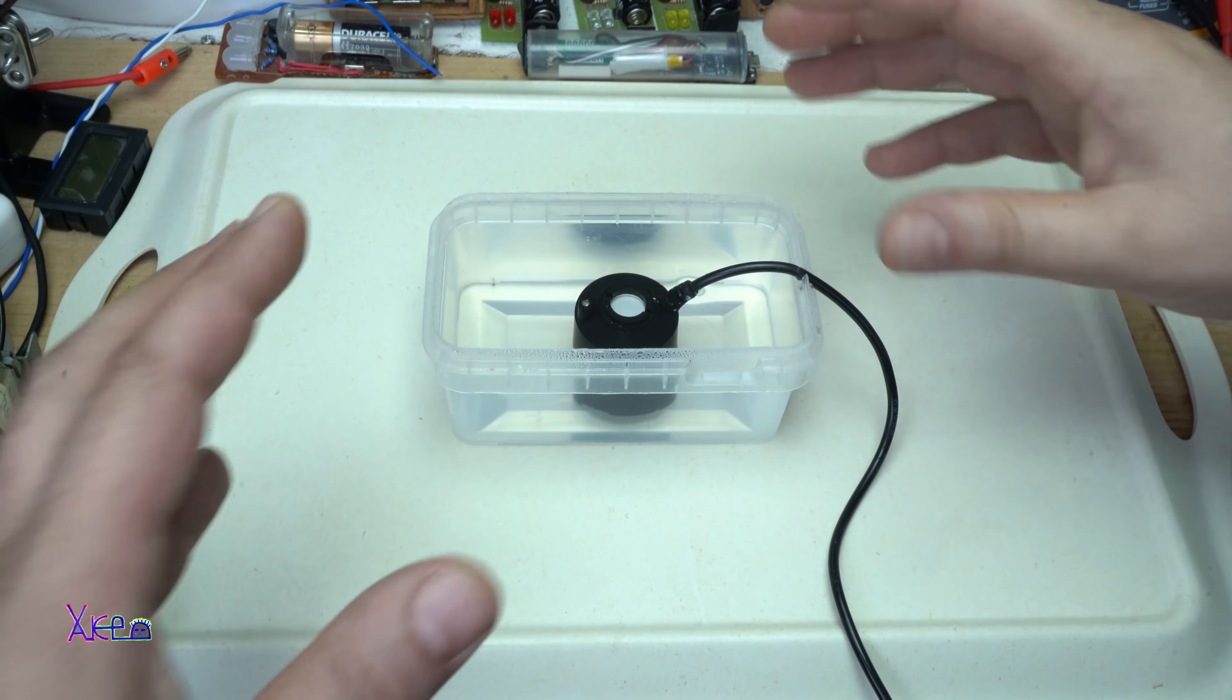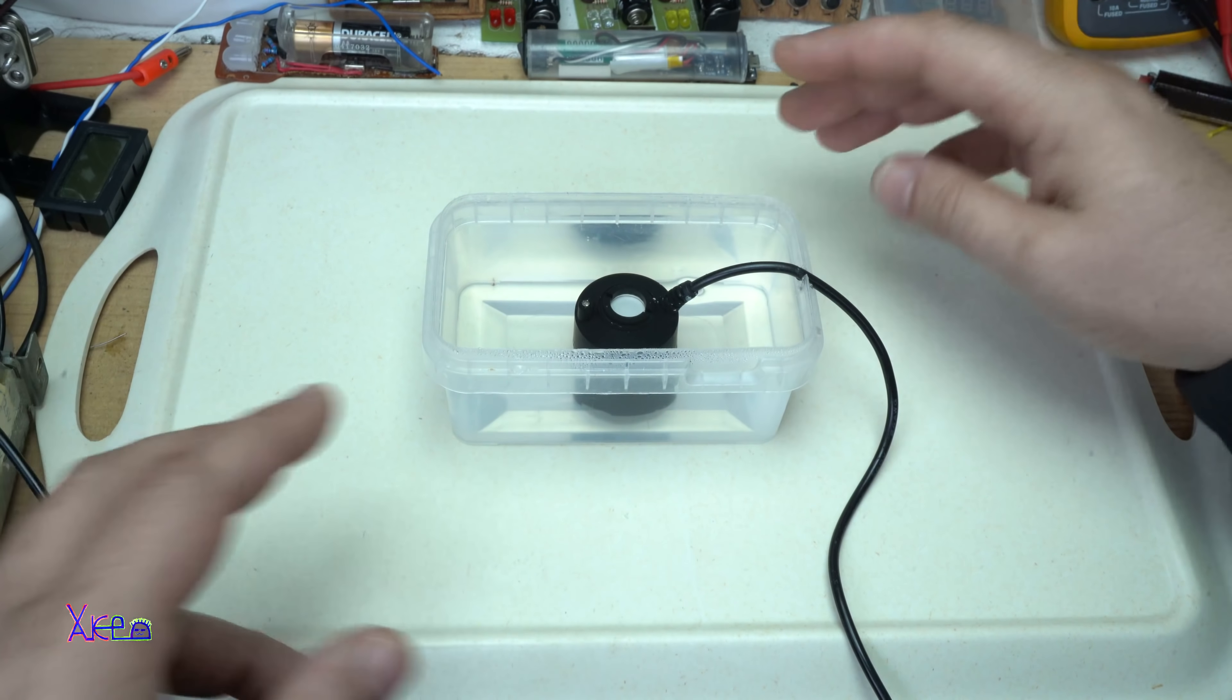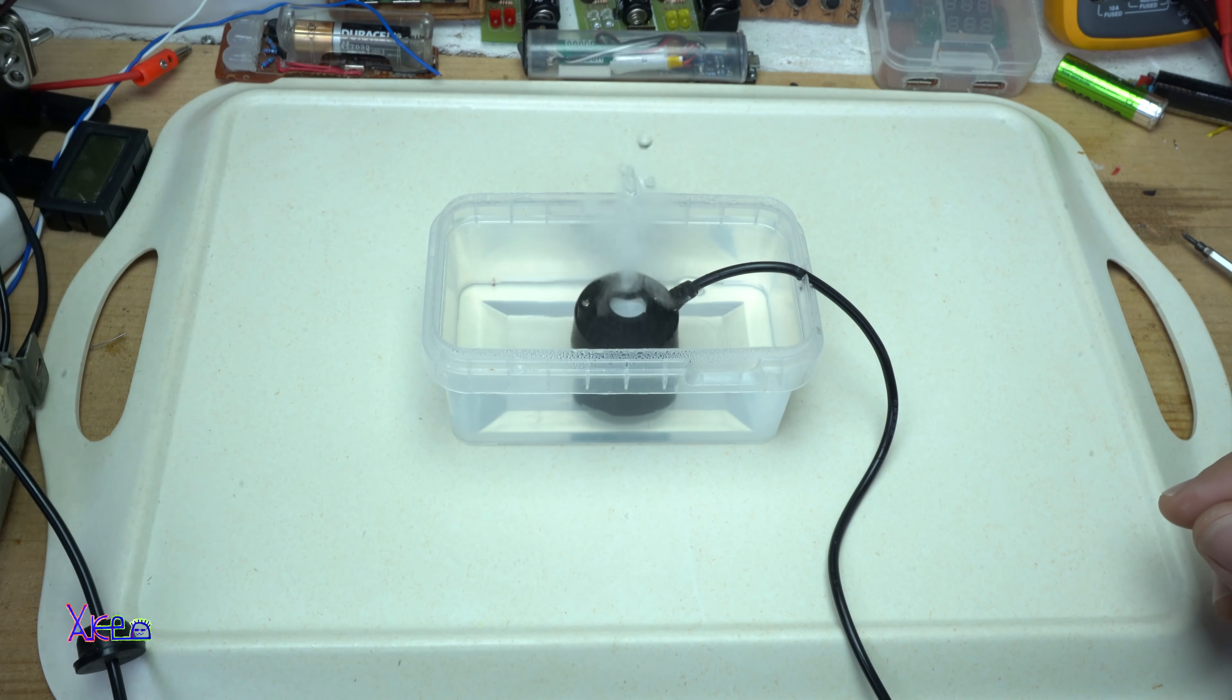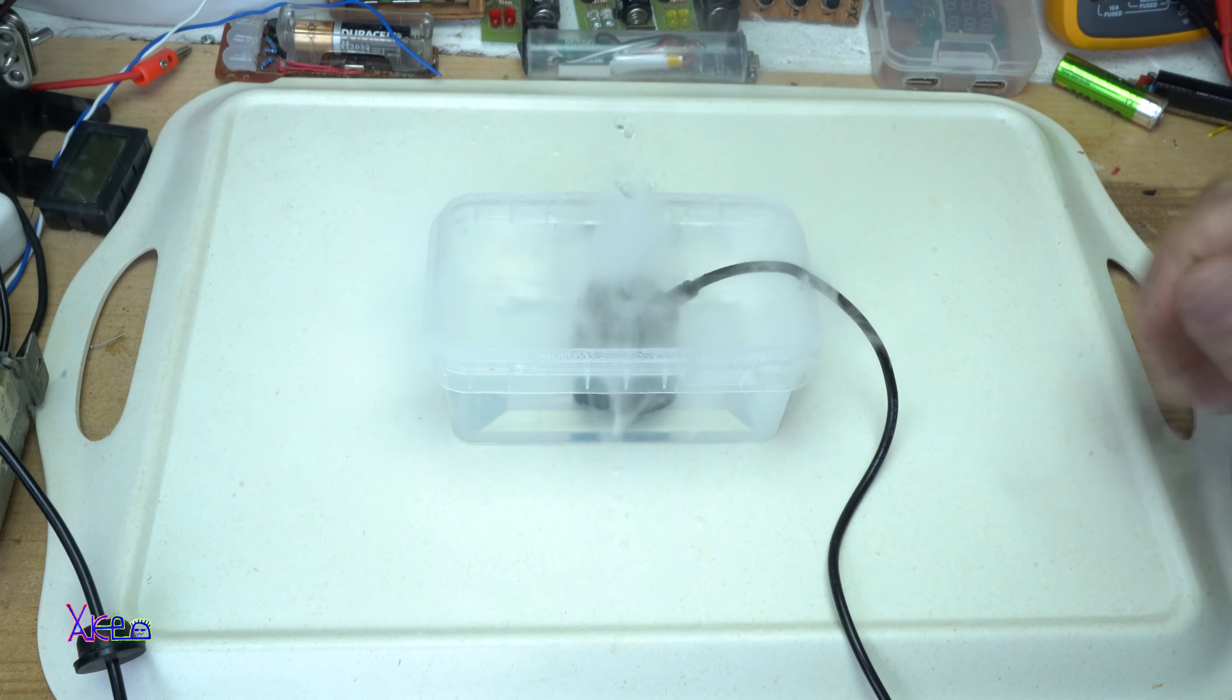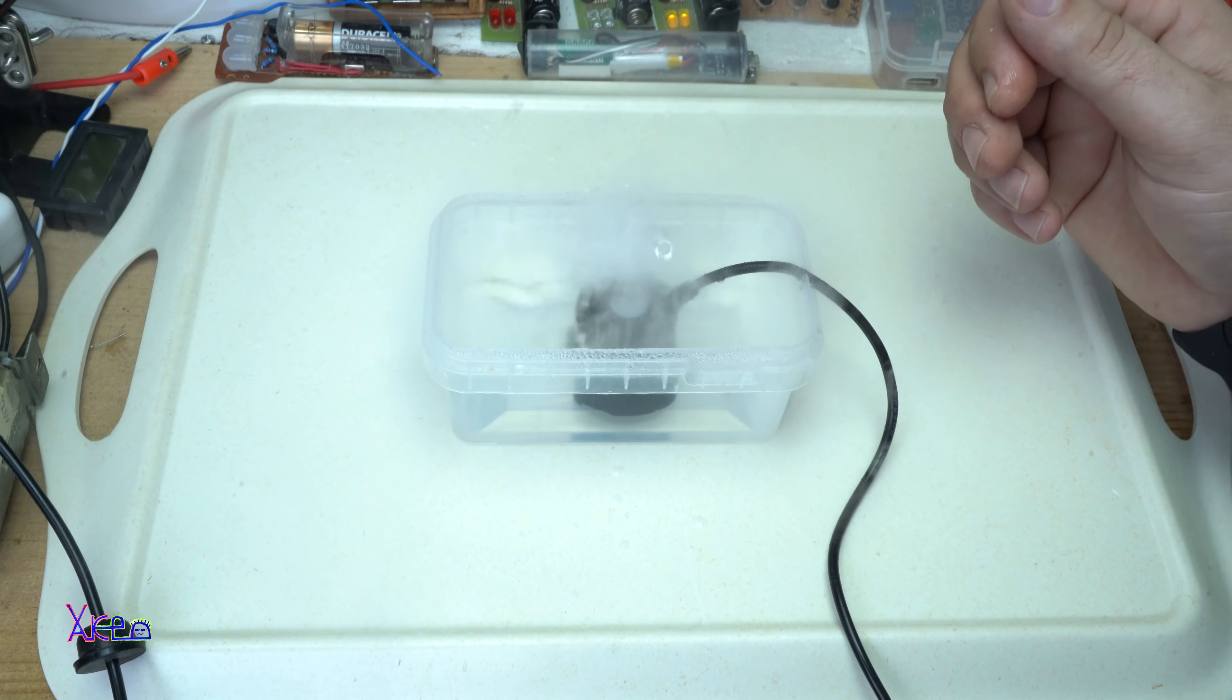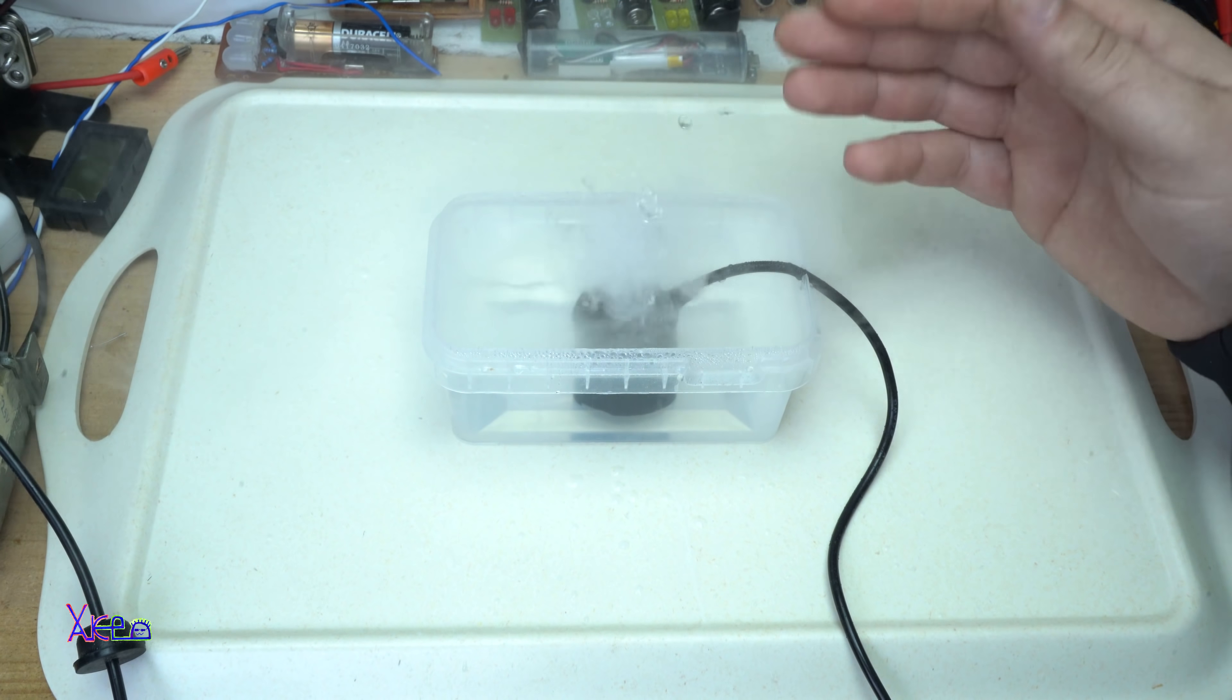And the table is here because there will be a mess of water drops. Turn on in 3, 2, 1. It's working as you can see, and it's making a fog or mist air humidifier.